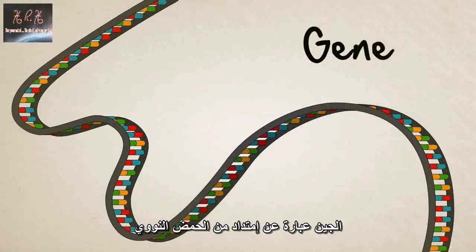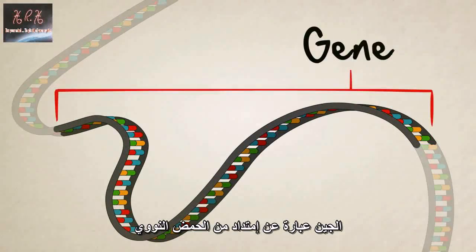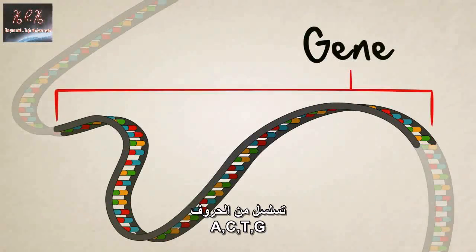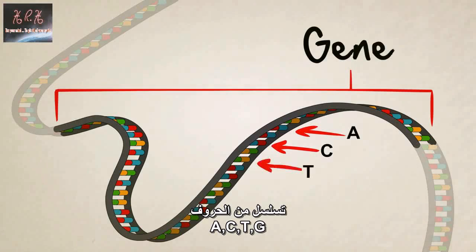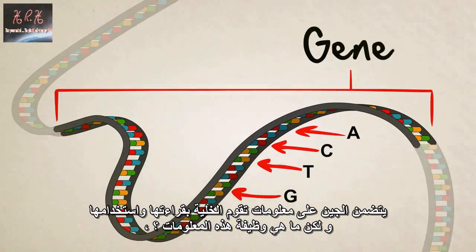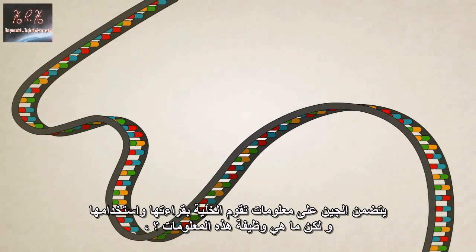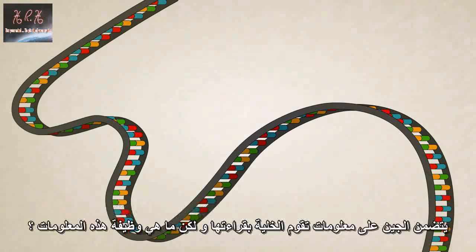A gene is a special stretch of DNA — a sequence of A's, C's, T's, and G's that code for something. A gene contains information for a cell to read and use, but what exactly does that information do?